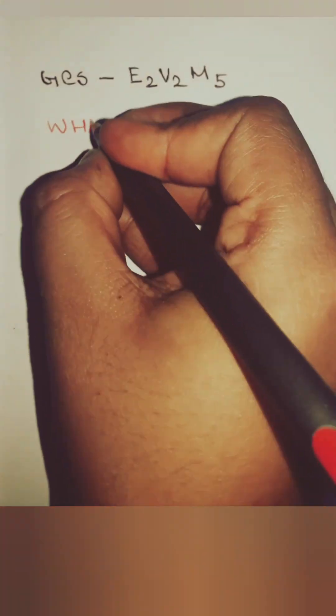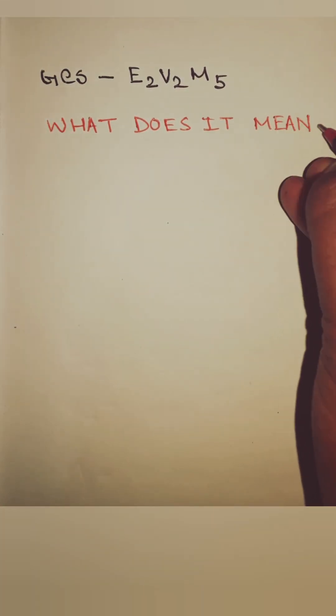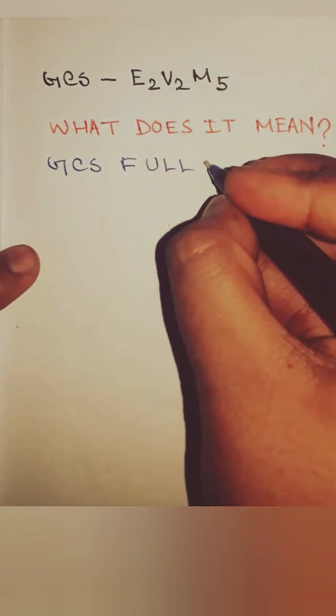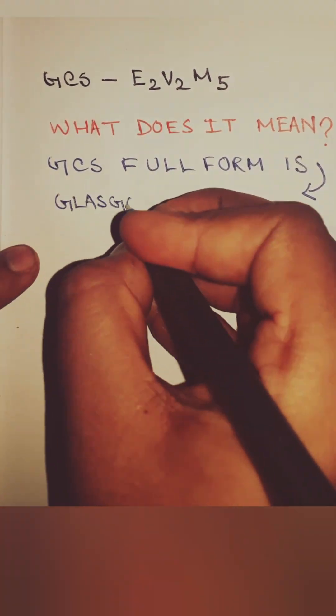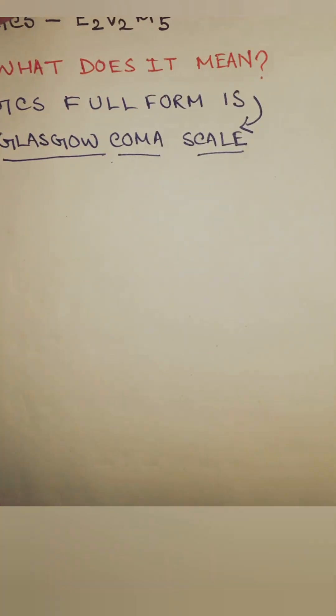GCS E2 V2 M5, what does it mean? GCS means Glasgow Coma Scale. It is used to assess neurological status of patients.